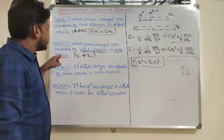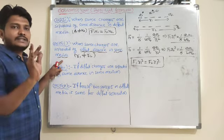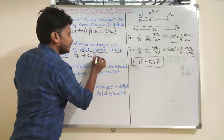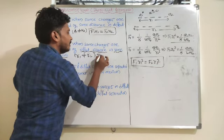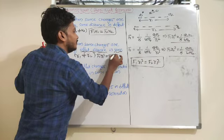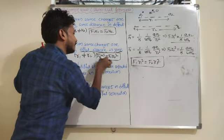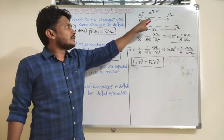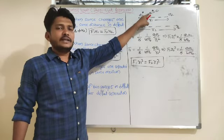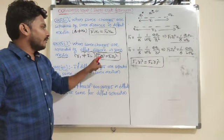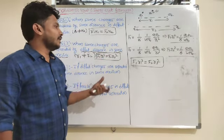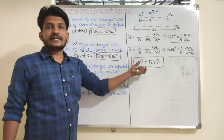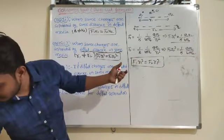So the formula for same charges separated by different distances in the same medium is F1·R1² = F2·R2². Charge is same and medium is same, but distance is different. Related to this formula, in yesterday's assignment I gave one question — let me read it.